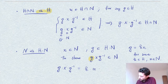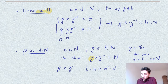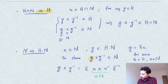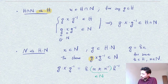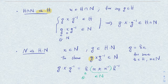Therefore g·x·g⁻¹ = h·n·x·n⁻¹·h⁻¹. We observe that n·x·n⁻¹ must be in N, since both n and x are elements of N and N is a subgroup. We are then conjugating this element of N by h, which is an element of G, and by normality of N in G, the result is in N. This concludes the verification.